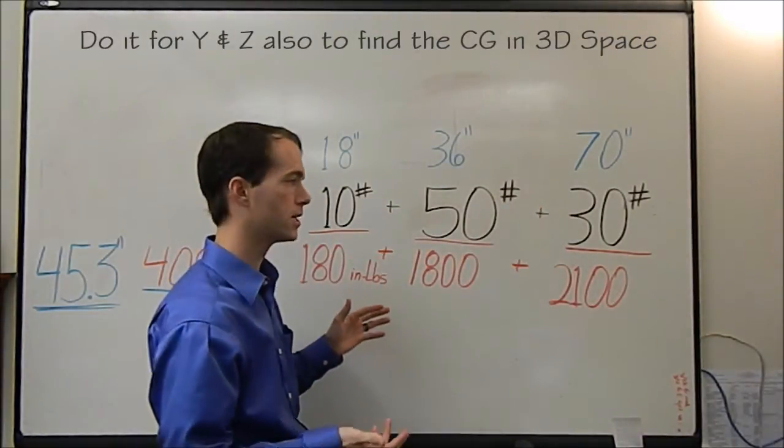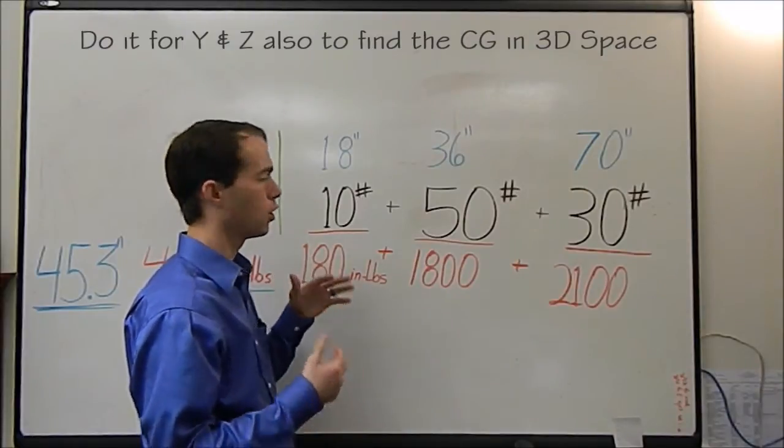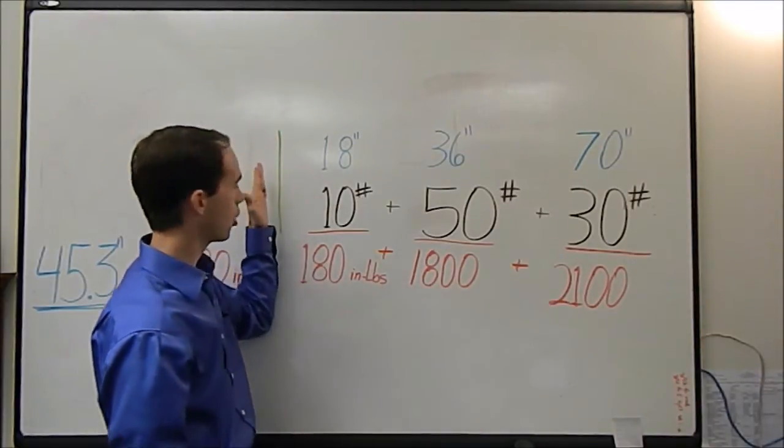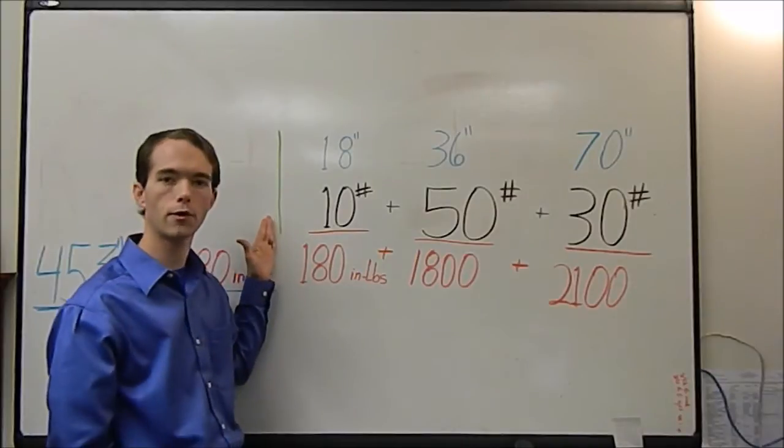But you could turn it and twist it for the y and the z or any other axis you want. What you start out doing is you pick an arbitrary reference point which I've denoted here by my green line.